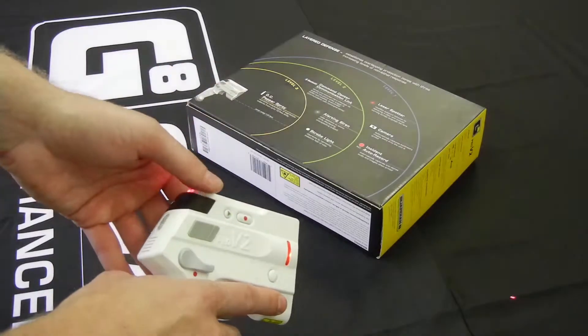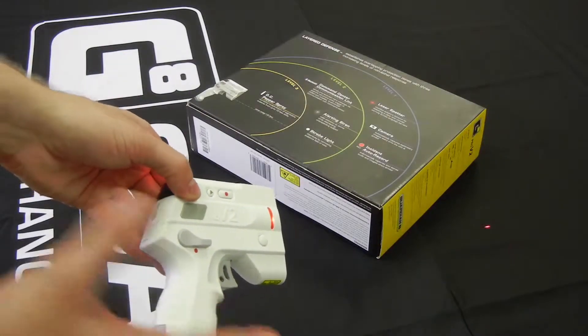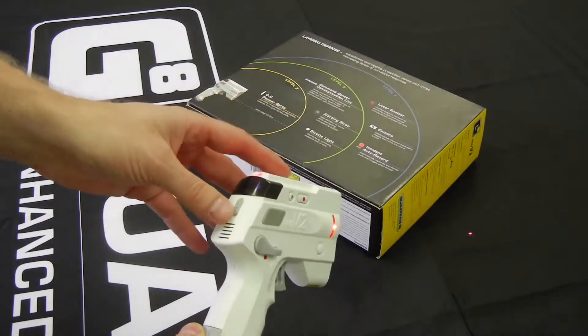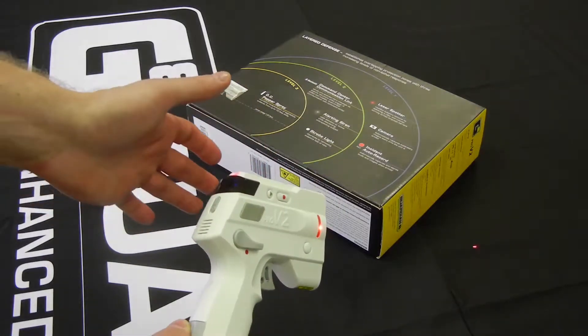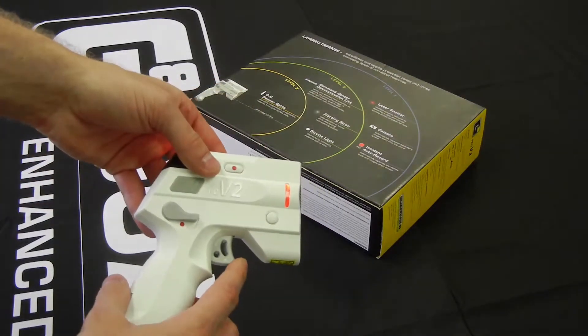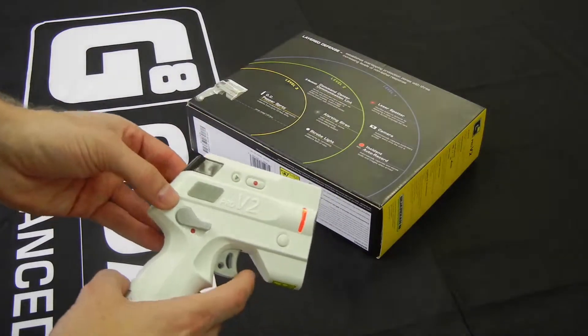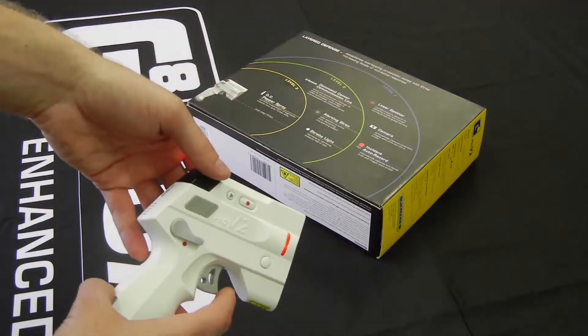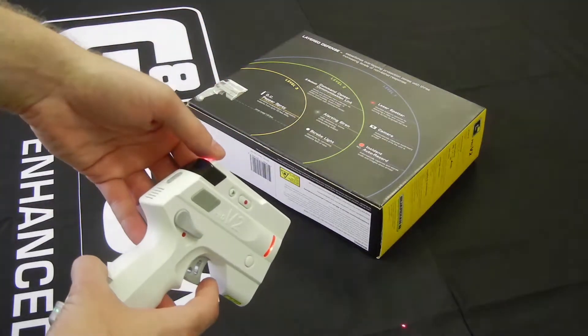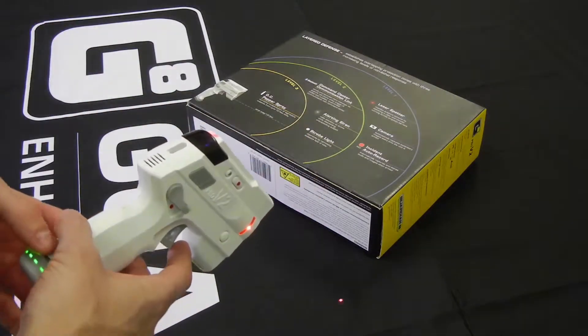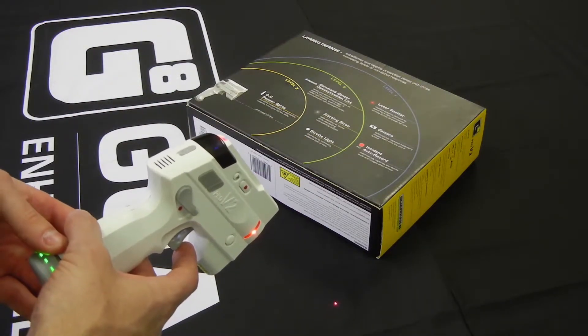Now when we go to level two, a couple things have to happen. First of all we have to be in a level one activation, which is power on, arming switch on. Then all we do is a half trigger pull. Now I'll do it very briefly just so you can hear it. It's likely that the siren will overwhelm the microphone on here. But then you'll be able to also see the strobe light in front of the unit. So here we go.